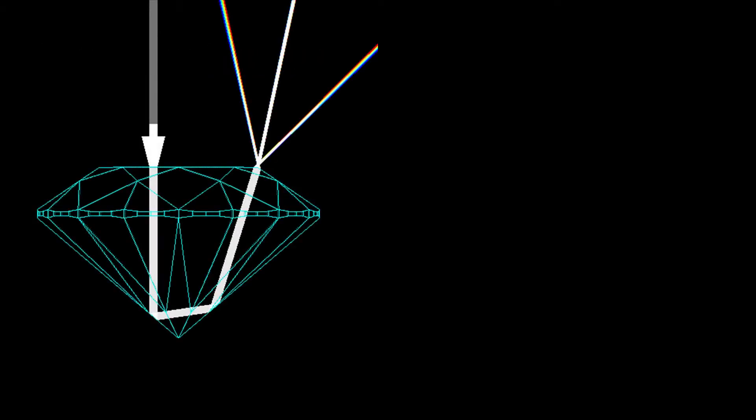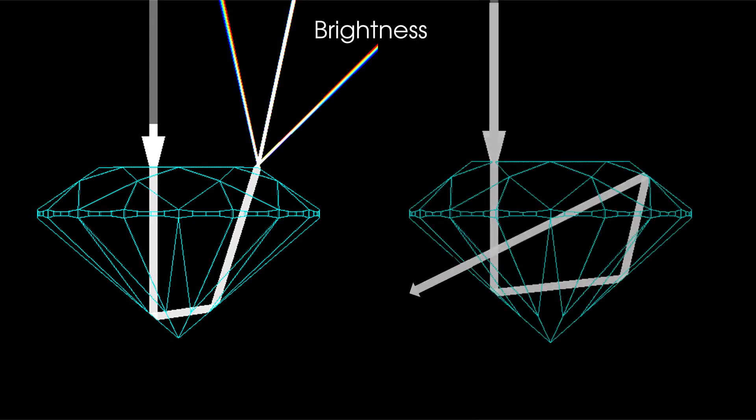Depending on how it was cut, light entering a diamond will either reflect and come up to the viewer's eyes as brightness, or escape through the bottom as leakage or windowing, causing dark areas.